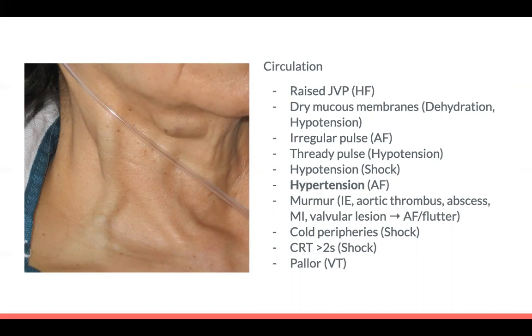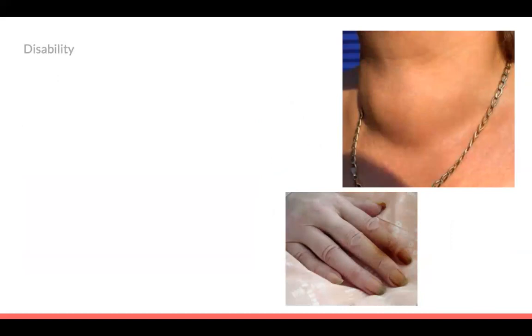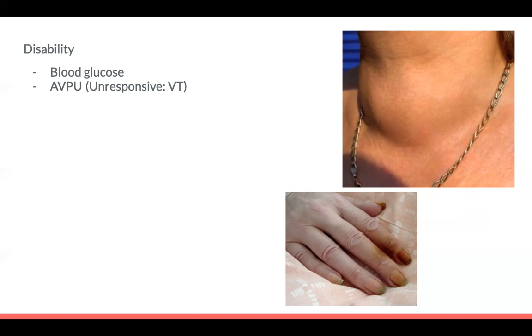Think about valvular lesions making AF and flutter more likely, and check for general signs of heart failure. Moving on to D — disability: check blood glucose, make sure the patient hasn't got DKA or Addison's. AVPU — if the patient is unresponsive, this is more worrying if they might have ventricular tachycardia. If the GCS is low, could they have acute alcohol excess? This can predispose to AF.